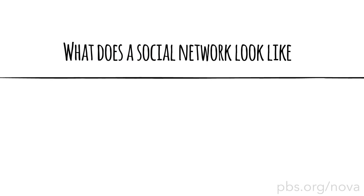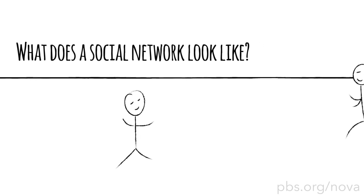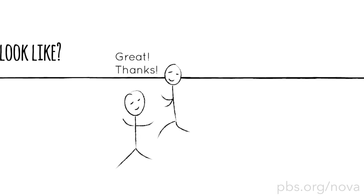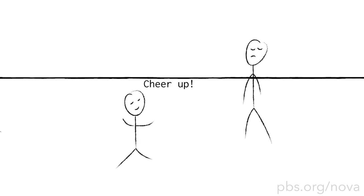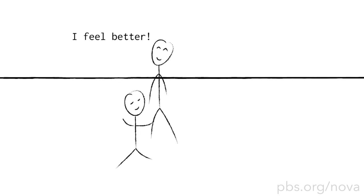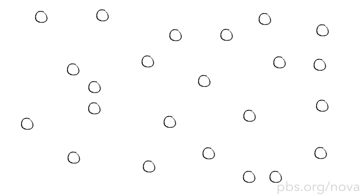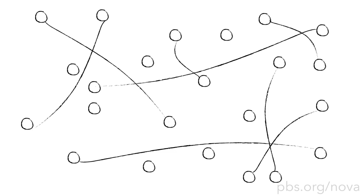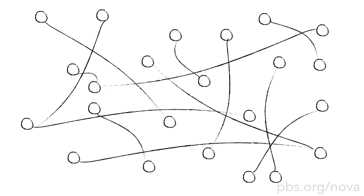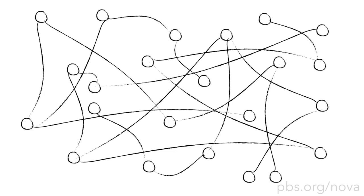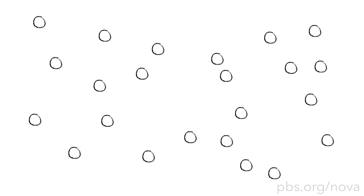What does a social network look like — the links of friendship between people? It often feels like we make friends through a random series of chance encounters, so you might think that social networks should look random too, something like this. But it turns out, real-life social networks don't look like that. They look more like this.